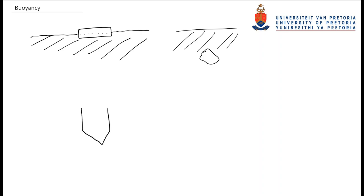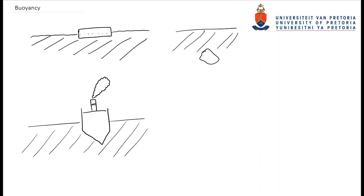The same principle as for the plank holds true for a big ship. But how does a big body like a ship actually float? If we want to understand why the ship floats, we need to understand the forces acting on the ship. The first force is the weight of the ship pushing down due to gravitation, but there's an equal force from the bottom up which is referred to as the buoyancy force. These two forces balance and the ship floats on top of the water.